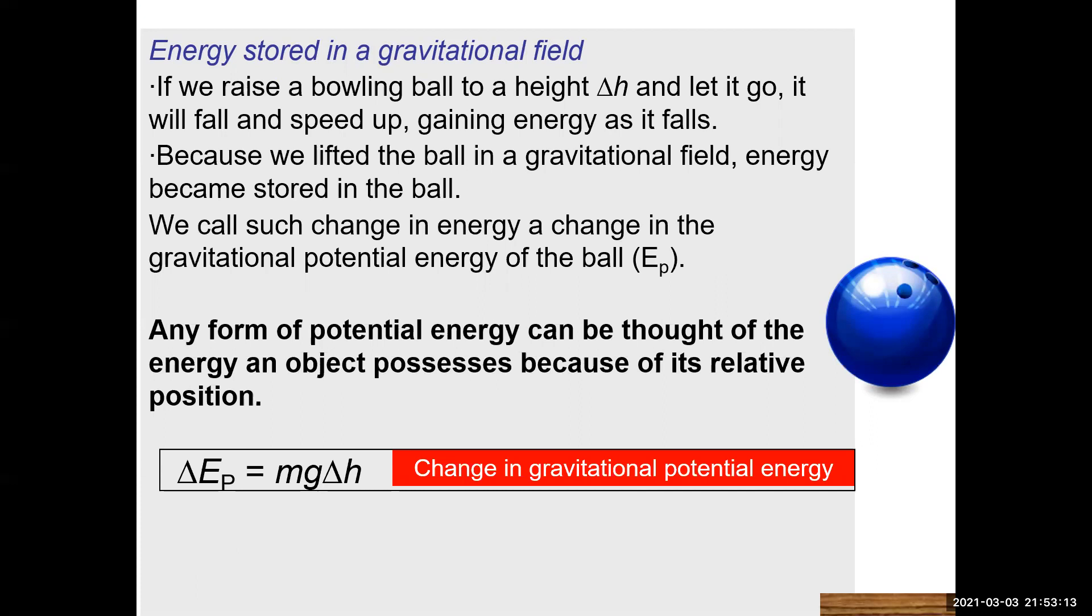Any form of potential energy can be thought of as the energy an object possesses because of its relative position. And this is really important, kind of transcends all types of potential energies. So formula for potential energy or change in gravitational potential energy is you take the mass of the object, multiply it by the acceleration due to gravity, and multiply it by the change in vertical height that it has experienced. And so we most often talk about changes in potential energy because it's about the change in the relative position.